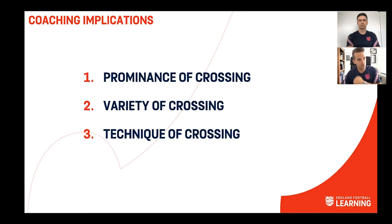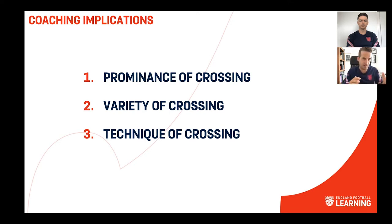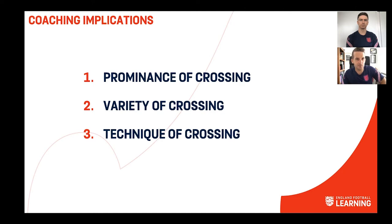Whether we're whipping it, driving it, or feeling it into an area — crossing from deep, or like that Kevin De Bruyne type cross trying to find space off shoulders from a deeper, not wider area — how do we design practices that give kids as much experience as possible with this variety of crossing opportunities, to strengthen and broaden their arsenal of passes and distribution into the box?